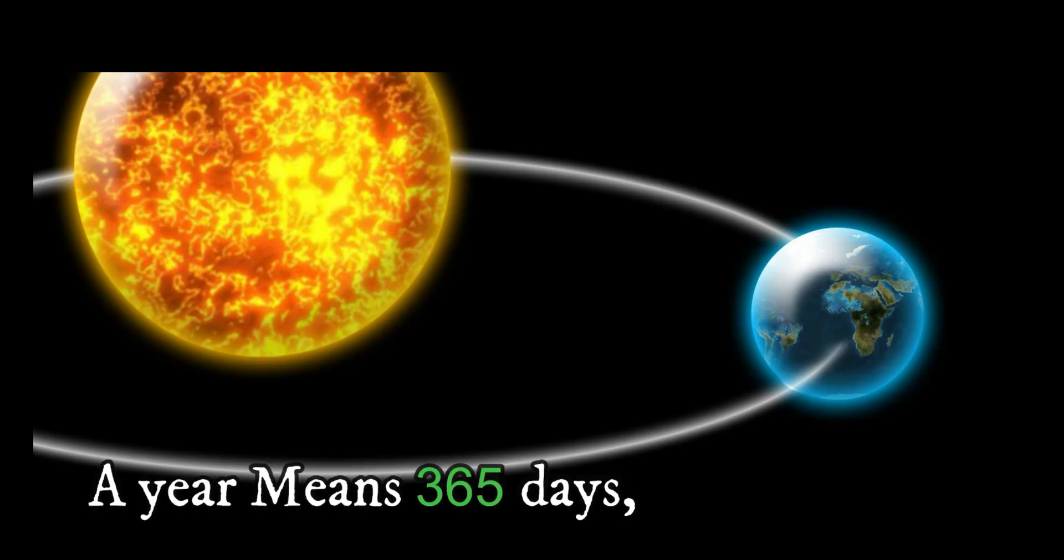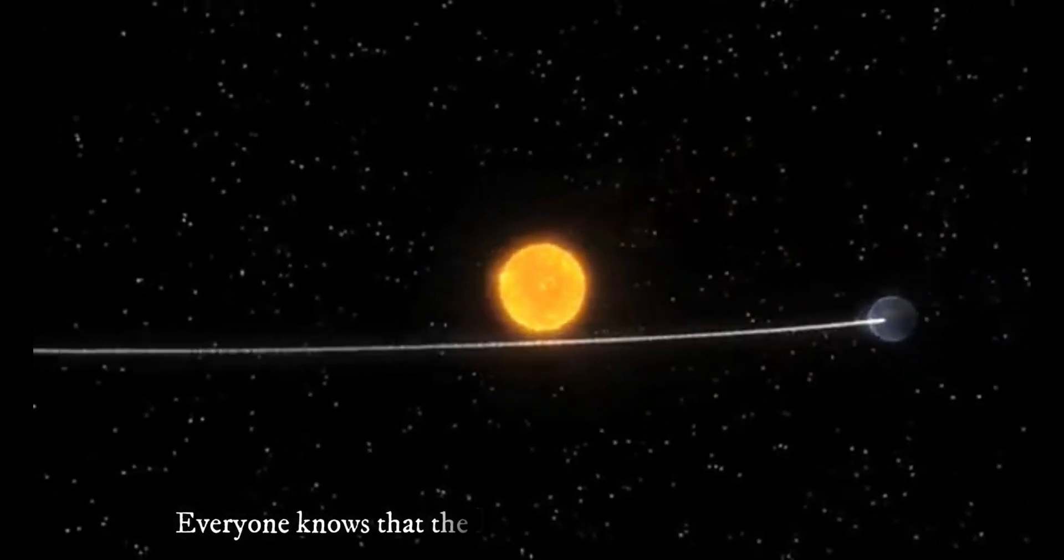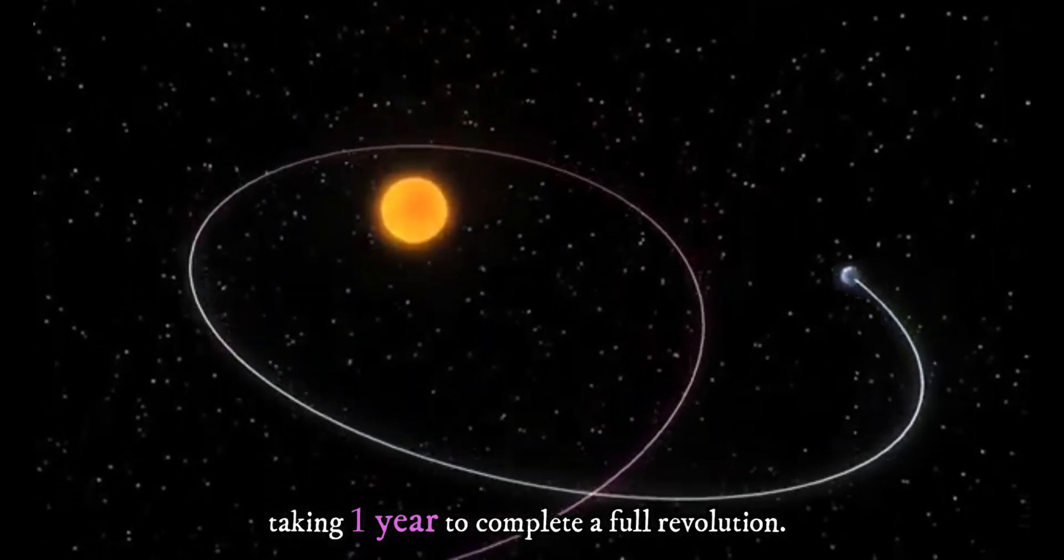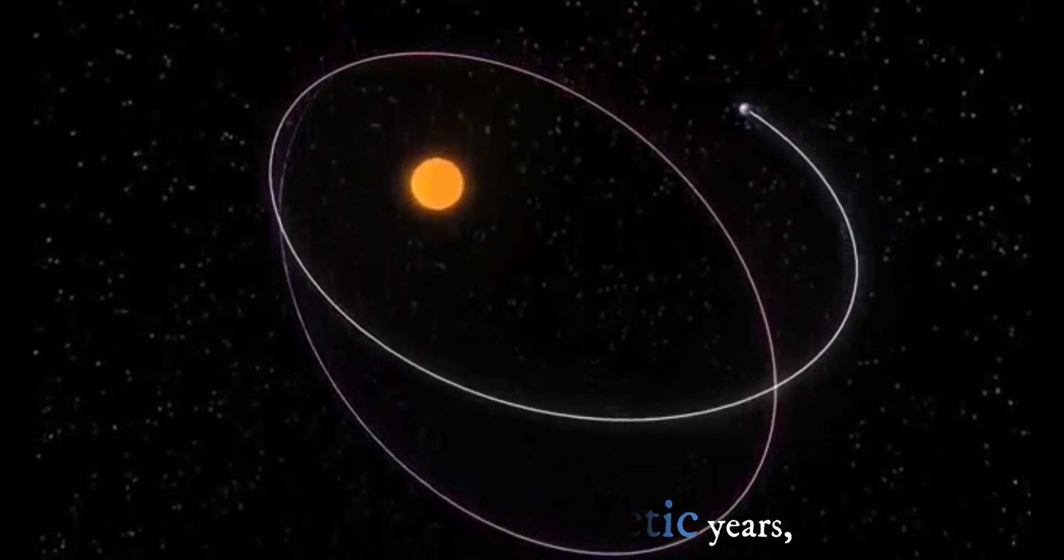A year means 365 days, but do you know what is a galactic year? Everyone knows that the Earth revolves around the Sun, taking one year to complete a full revolution. But there are also galactic years. The Sun, with its family of planets, moons, asteroids, and comets, is also revolving around our Milky Way galaxy.